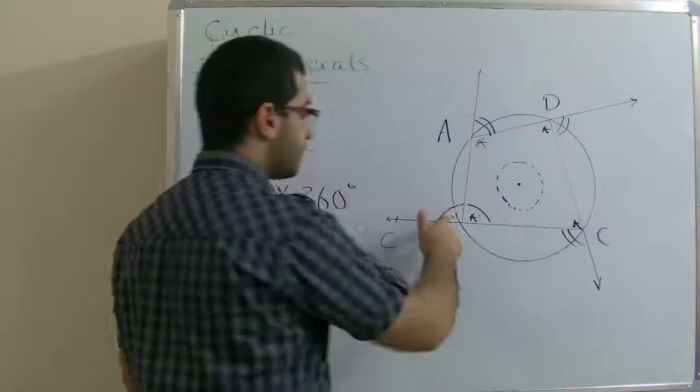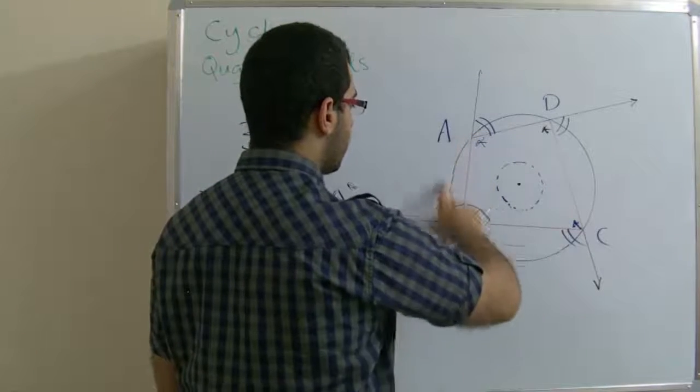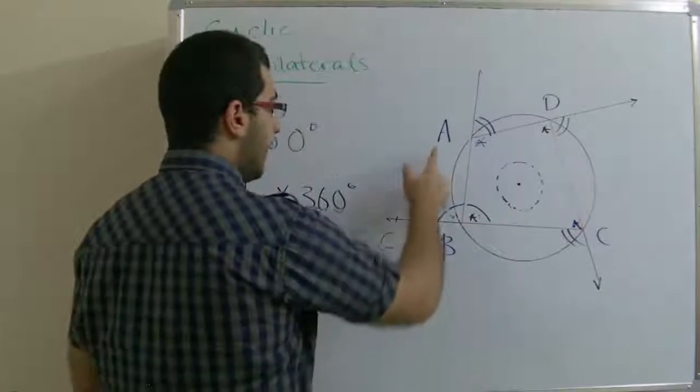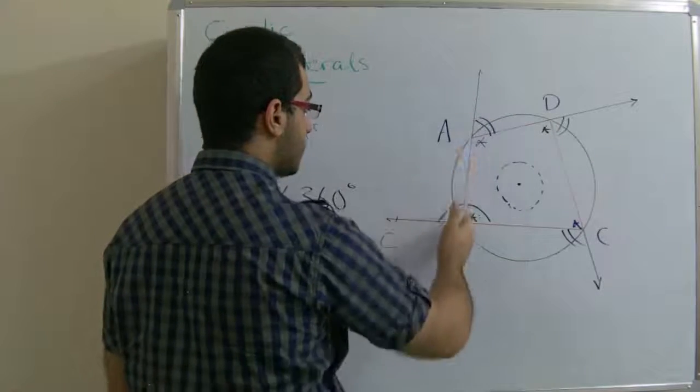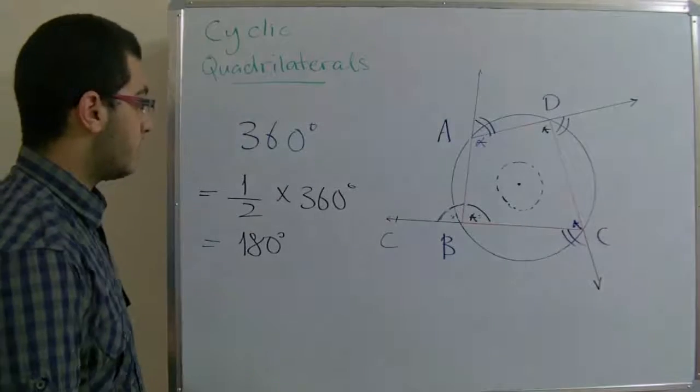This angle equals the measure of this arc here, AB, because it cuts this arc. These are the properties of the cyclic quadrilateral.